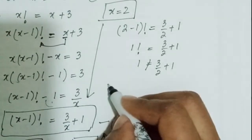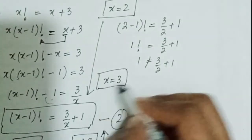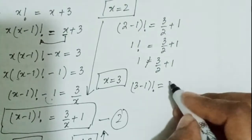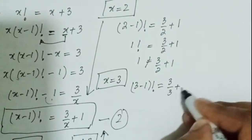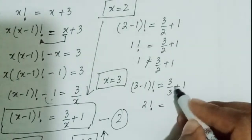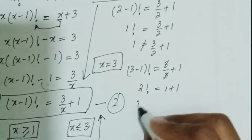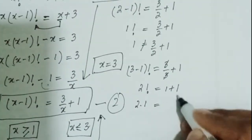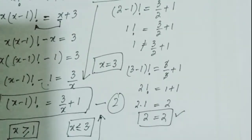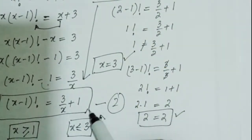Now check x equals 3: (3 minus 1) factorial equals 3 over 3 plus 1. That gives 2 factorial equals 1 plus 1. Since 2 factorial equals 2 times 1 equals 2, and the right-hand side is also 2, this is true. So x equals 3 is our solution for equation number 2.